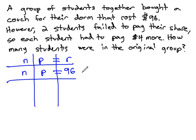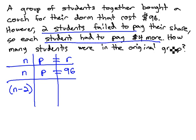That's what was supposed to happen. However, in reality, two students failed to pay their share, so the number has been decreased by two. Now, to make up for that, each student has to pay $4 more, so each individual contribution for price is going to increase by $4. Now, the couch hasn't changed in value. The same amount of money is still exchanged. It's still $96 for the couch.